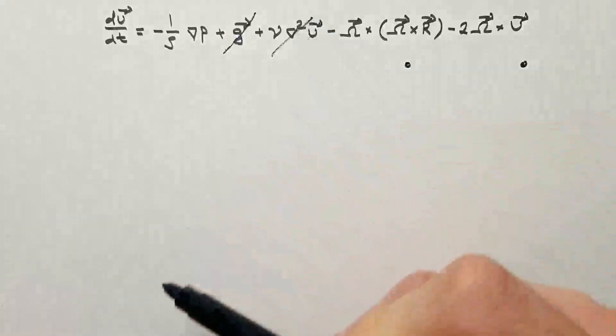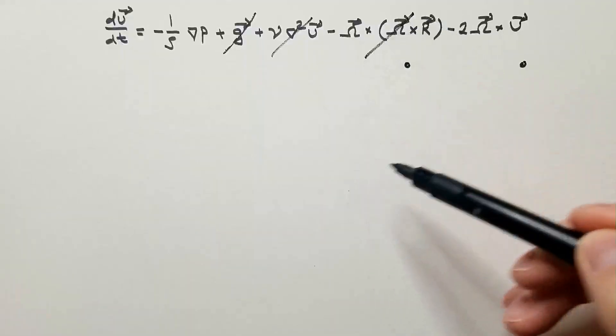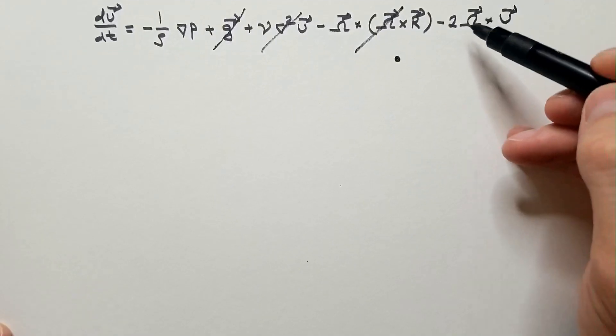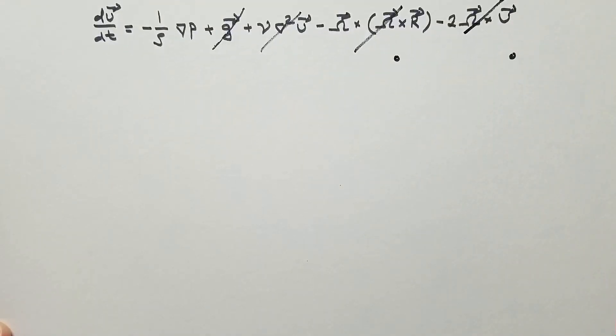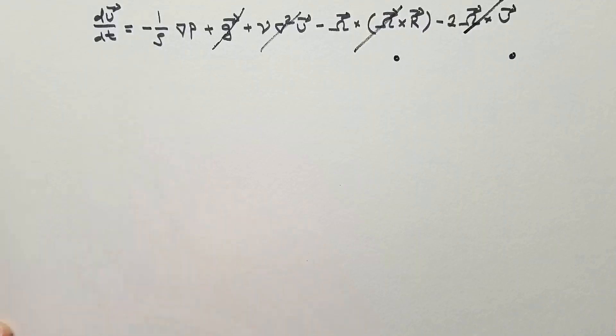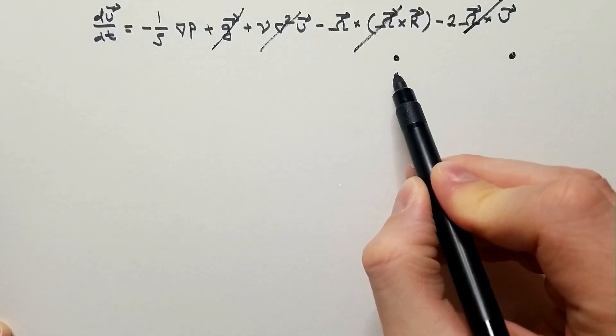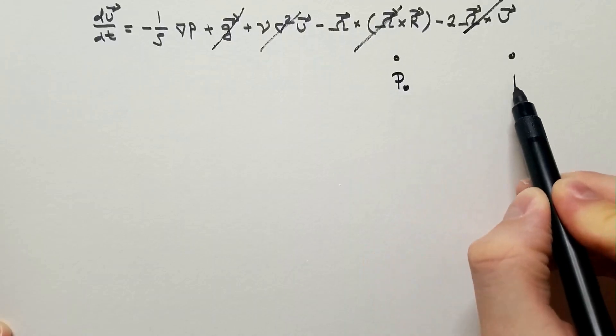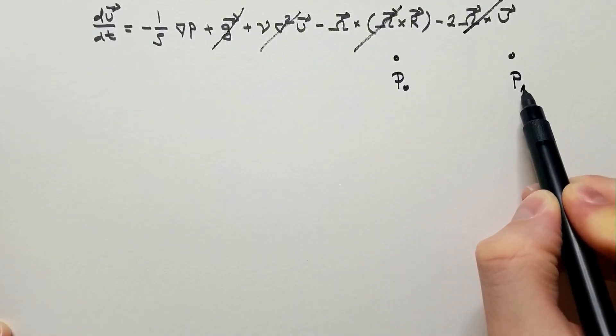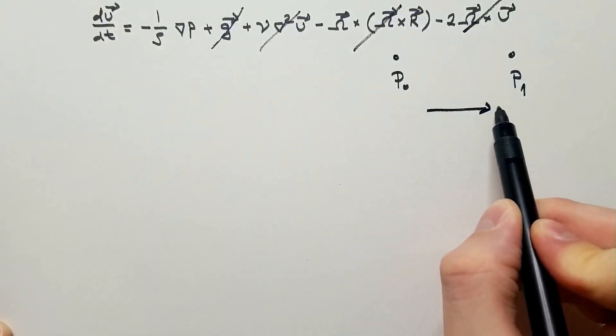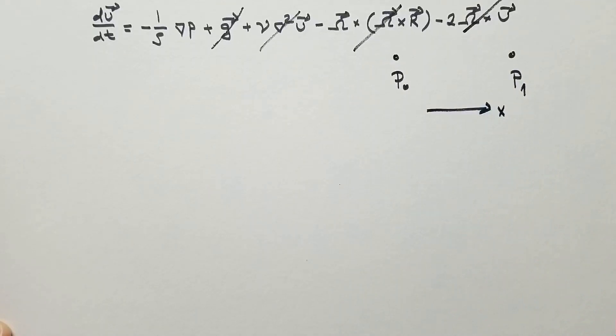There is no viscosity, no centrifugal force and no Coriolis force. The only force that survives is the pressure gradient force. There is a pressure difference. Let's say here pressure is P0, here pressure is P1. So my, and I will take this as the x coordinate.